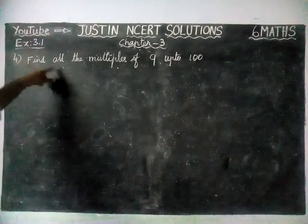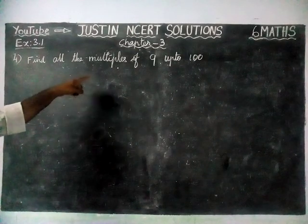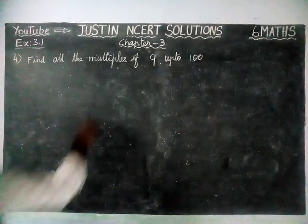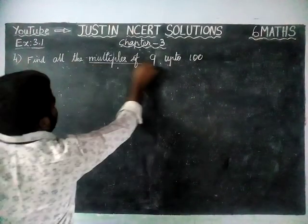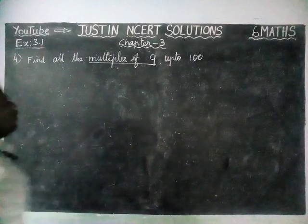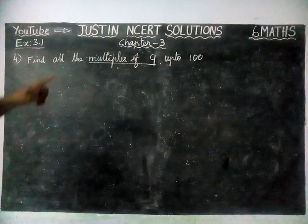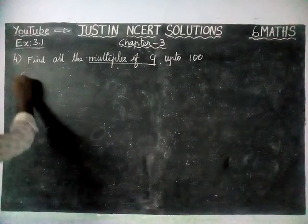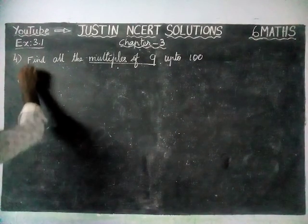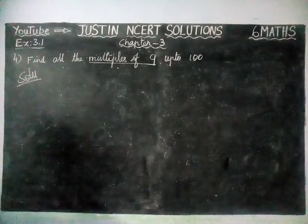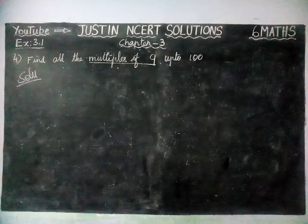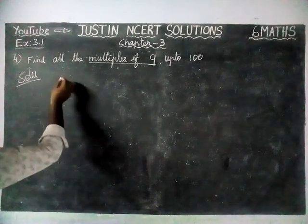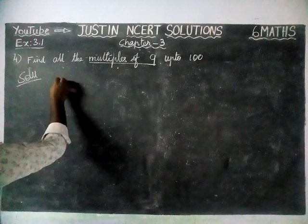Find all the multiples of 9 up to 100. The meaning of multiples of 9 — we have to find the multiplication table for 9. We are going to write the 9 times table.